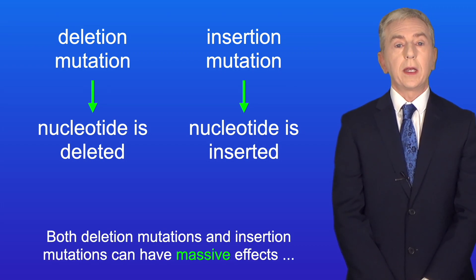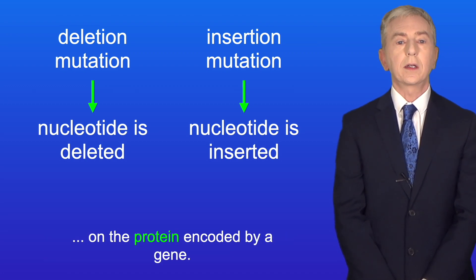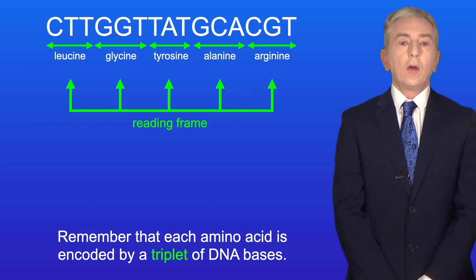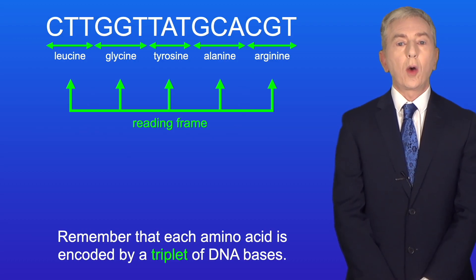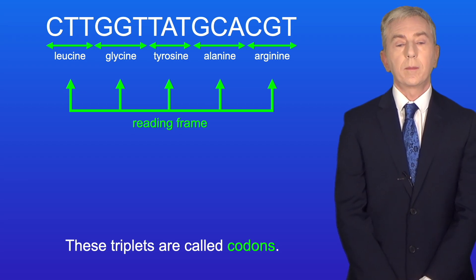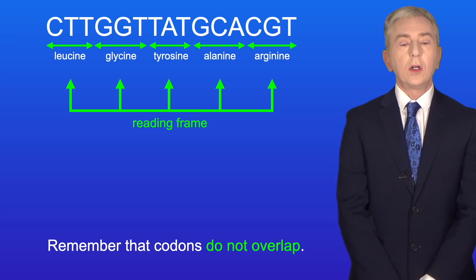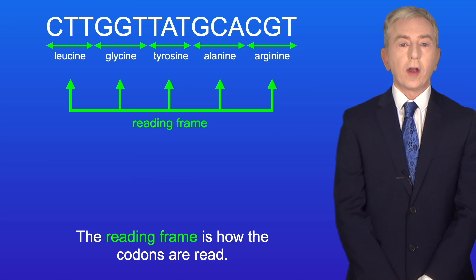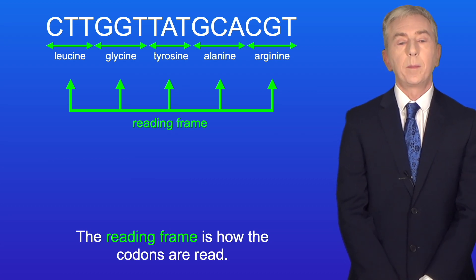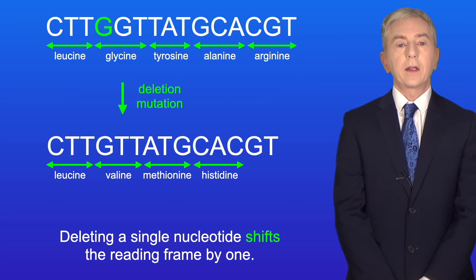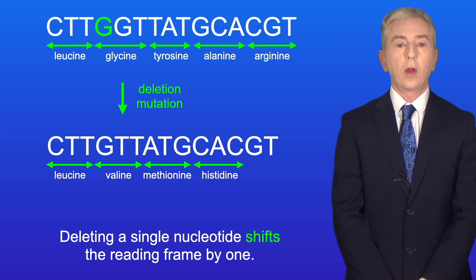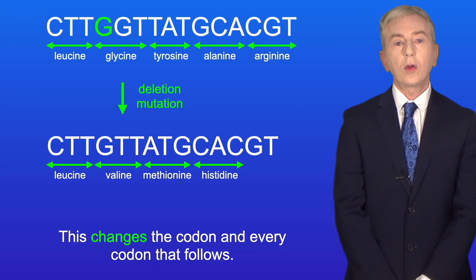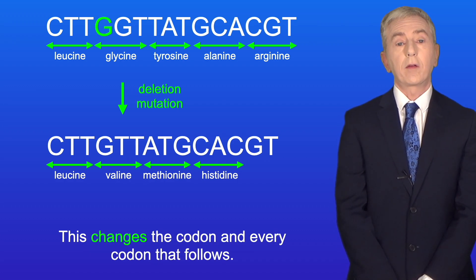Both deletion mutations and insertion mutations can have massive effects on the protein encoded by a gene. Remember that each amino acid is encoded by a triplet of DNA bases, and these triplets are called codons. Remember that codons do not overlap. The reading frame is how the codons are read. Deleting a single nucleotide shifts the reading frame by one, which changes the codon and every codon that follows.